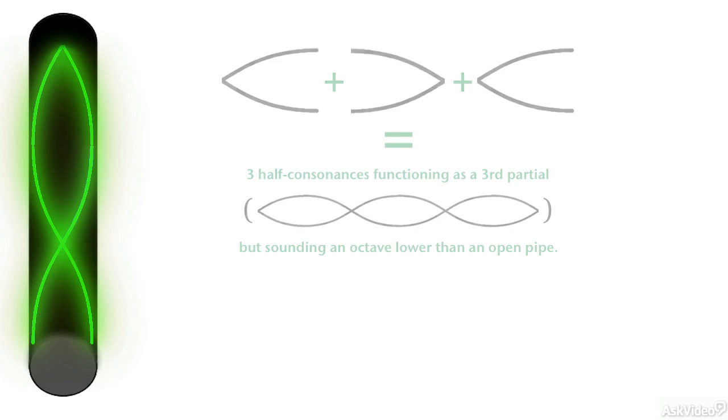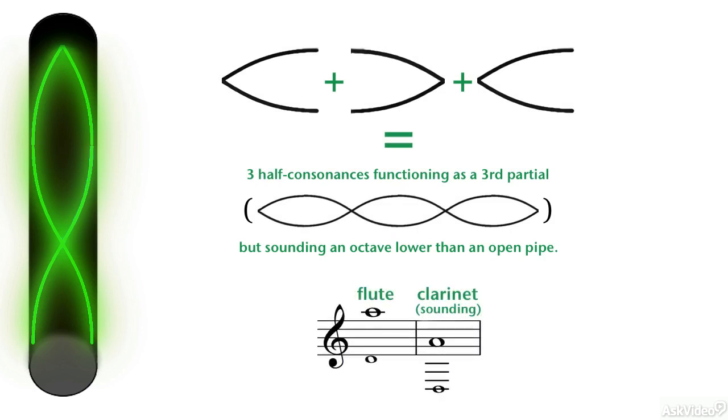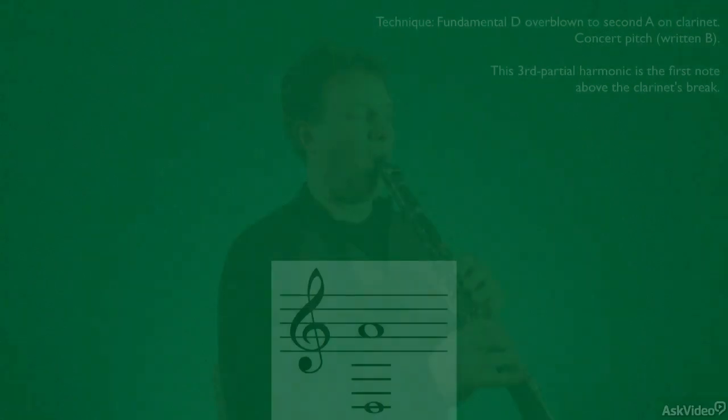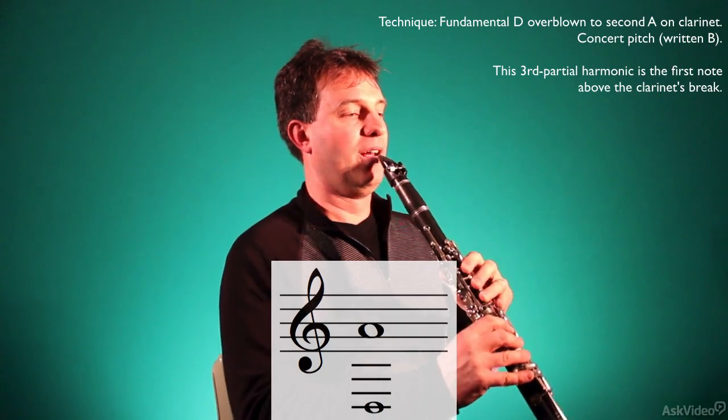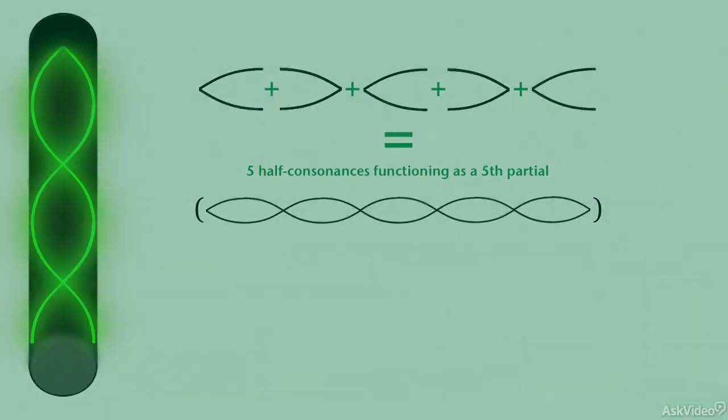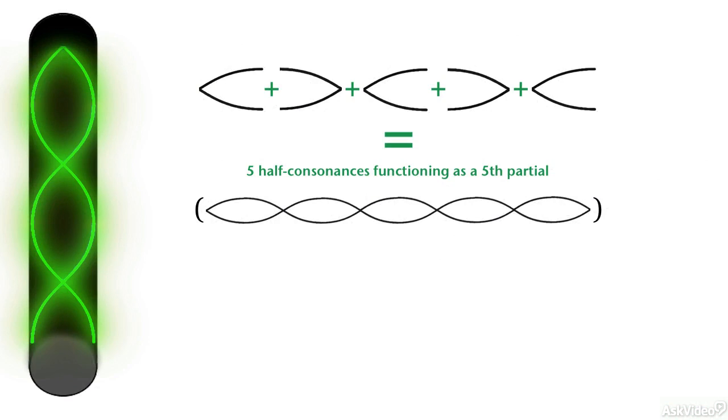Since the pressure at either end of the pipe is unequal, there's no way to divide the waveform into two equal nodes. The clarinetist, therefore, can only overblow odd-numbered partials, which divide the pipe into multiple half-consonances. The first possible overblown harmonic is the third partial, an octave and a fifth above the fundamental. This produces one and a half waves, or three half-consonances. The next partial available is the fifth, causing the tube to resonate in five half-consonances, or two and a half waveforms.